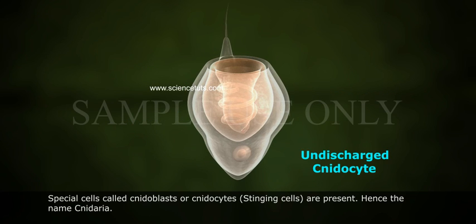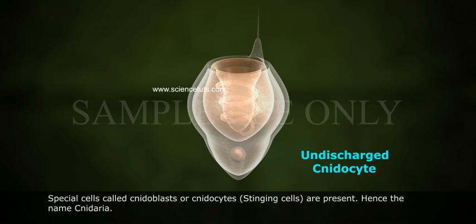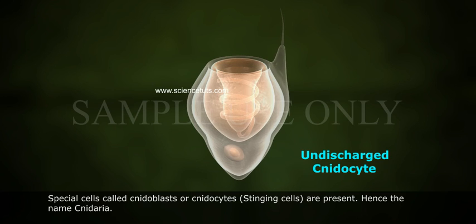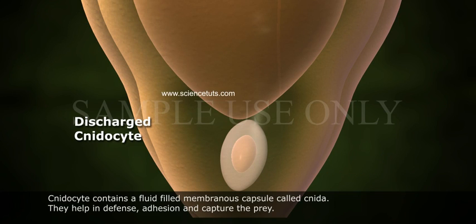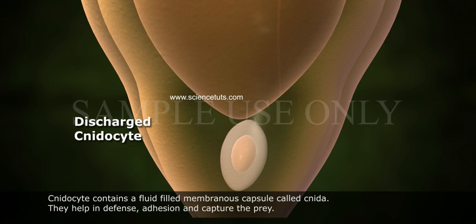Special cells called cnidoblasts or cnidocytes — stinging cells — are present, hence the name Cnidaria. The nematocyst contains a fluid-filled membranous capsule called nida. They help in defense, adhesion, and capture of prey.